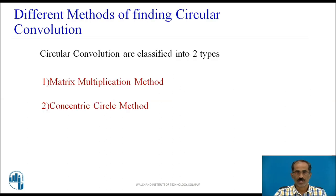There are different methods to find the circular convolution. There are two types. First one is the matrix multiplication method. Second one is the concentric circle method. Let us see the first method, matrix multiplication method.